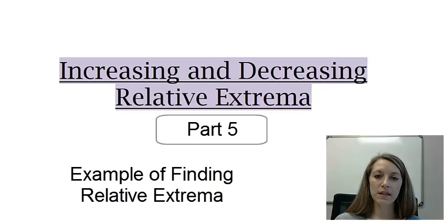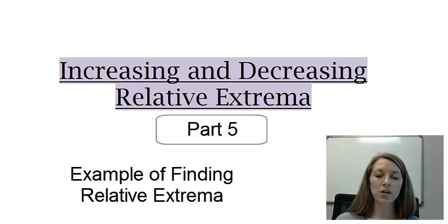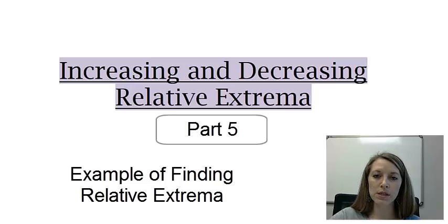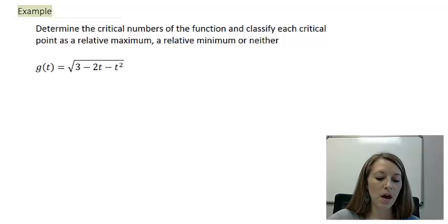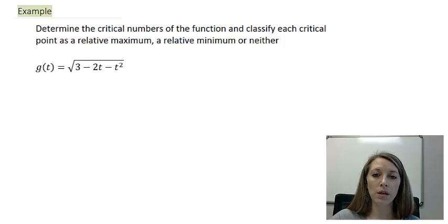We are focusing on the relative extrema portion of this section. Relative extrema is a fancy way of trying to find the extremes of the function — finding the maximums or minimums. We went through visuals in the last video, so now let's figure out how to do it when we don't have the graph offhand. The example here asks us to determine the critical values of the function and classify each critical point as a relative maximum, a relative minimum, or neither.